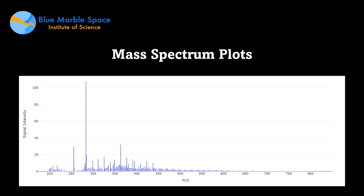I'm going to talk about the data visualization we've done. These mass spectrum plots are something I worked directly on in a team of three. A mass spectrum plot is basically a graph that displays the Mz ratio — which stands for the mass to charge ratio — as you can see here.